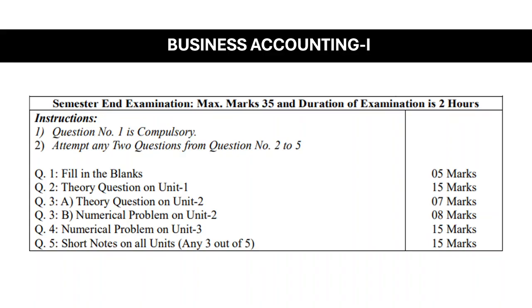Question No. 3 has two parts — Part A and Part B. In Part A of Question No. 3, there is a theory question on Unit No. 2, which is accounting standards, and that is for 7 marks. Question No. 3 Part B is a numerical problem on Unit No. 2 — accounting standards — for 8 marks. So Question No. 3 total stands for 15 marks.